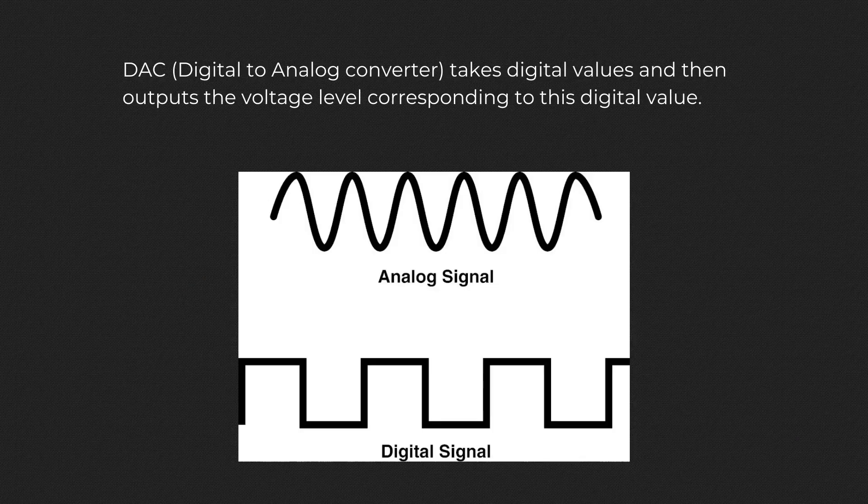As I've made a video covering ADC, and if you have watched it, the concept of DAC should be obvious to you as it simply is the inverse of ADC. DAC converts digital values and then outputs the voltage level corresponding to that digital value.